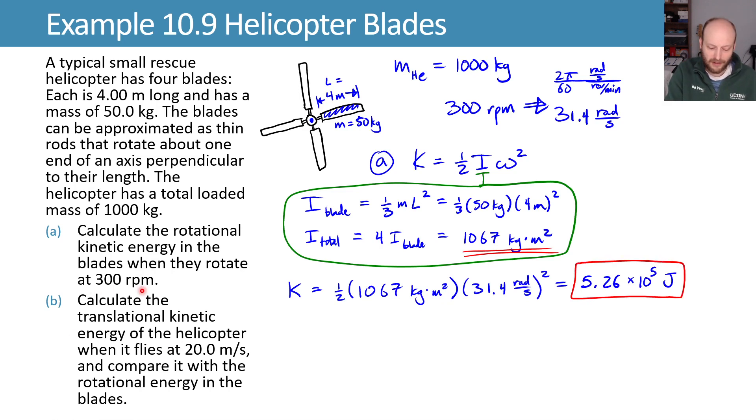Now we want to calculate our translational kinetic energy of the helicopter when it's flying at 20 meters per second and compare it with this rotational energy. Our translational kinetic energy is one half mv squared. We're now using the mass of the helicopter. So we'll plug in our values and we end up with 2 times 10 to the fifth joules.